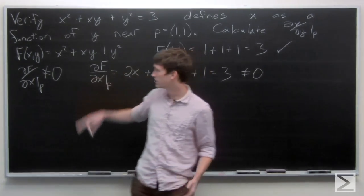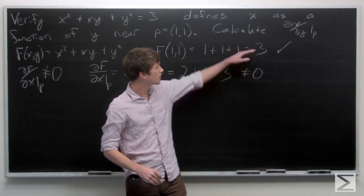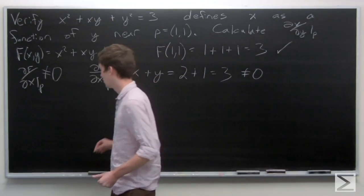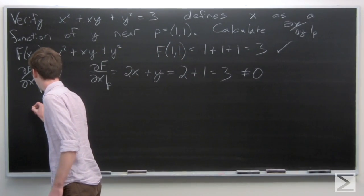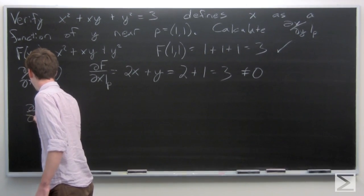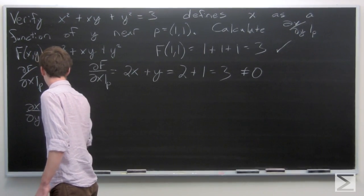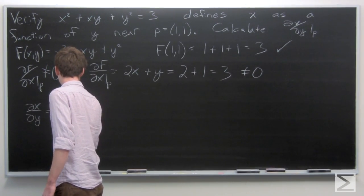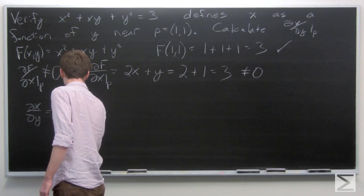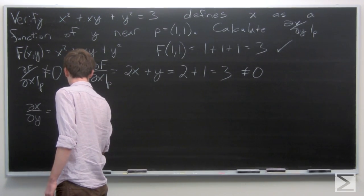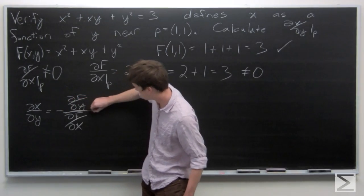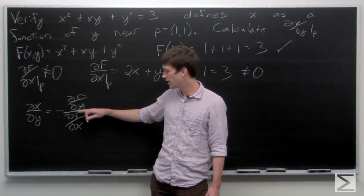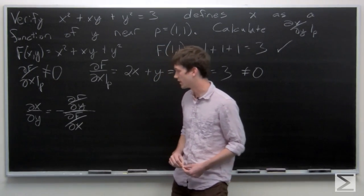And that means that we can calculate our partial derivative of x with respect to y at p. The implicit function theorem tells us that it's the negation of the partial derivative of f with respect to y over the partial derivative of f with respect to x.